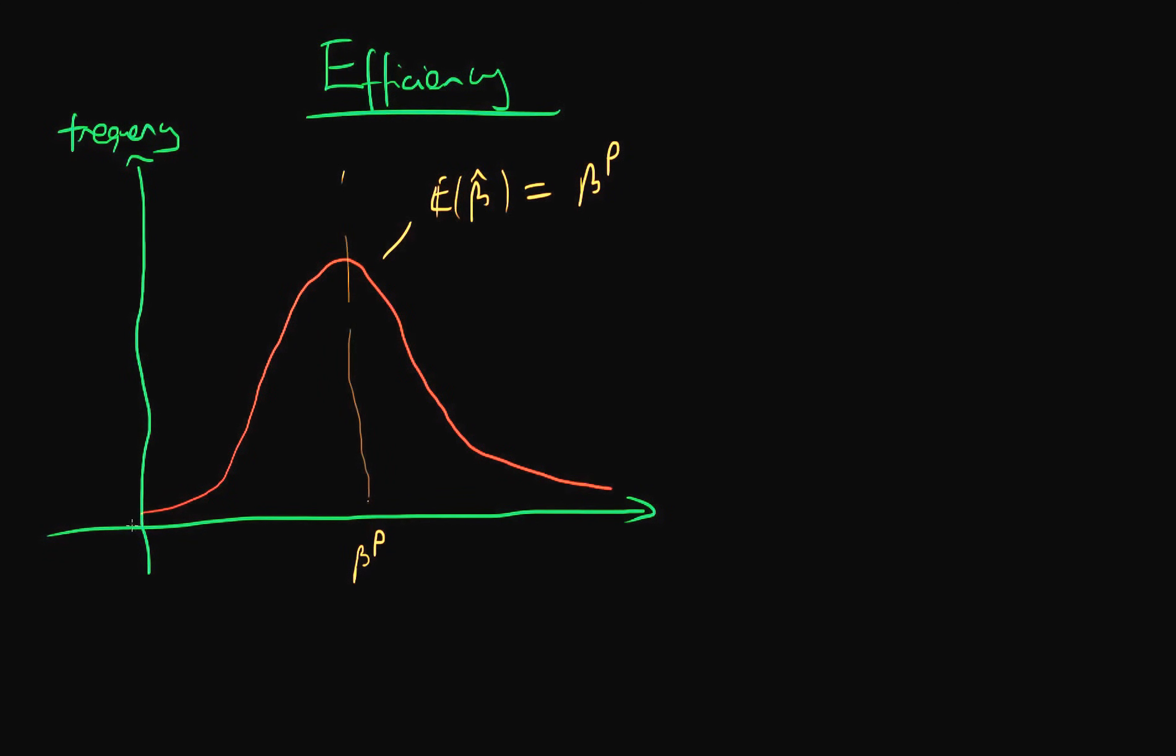But let's say that we have another estimator which uses exactly the same sample size, and yet it actually outputs a range of values for β, or ranges of estimates of β, which are closer to the population parameter. So let's call this estimator β̃.